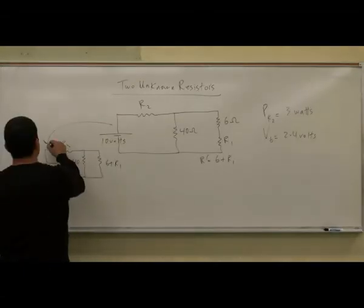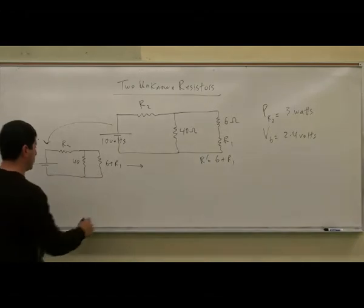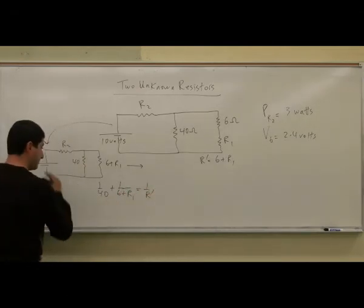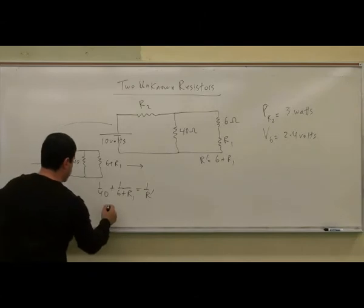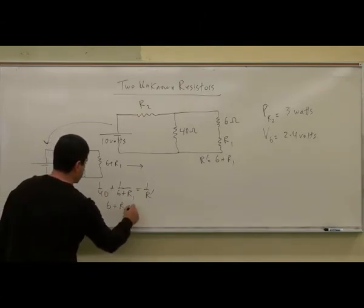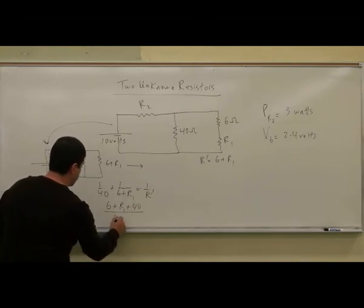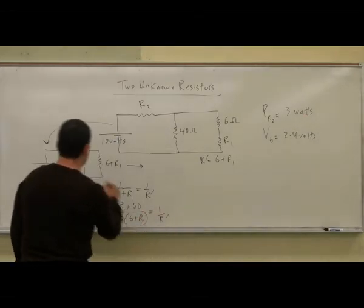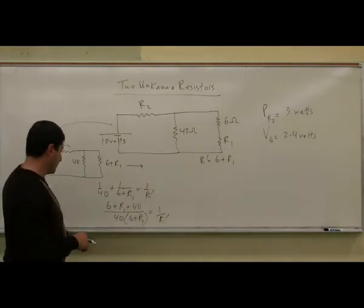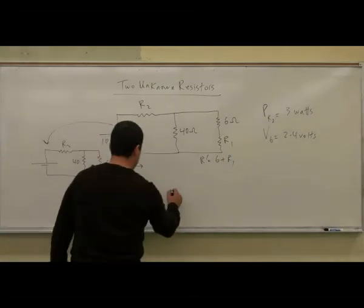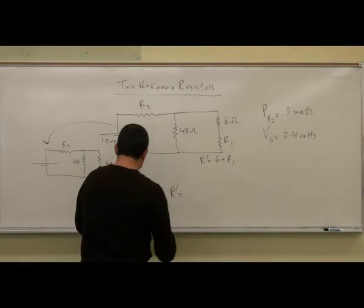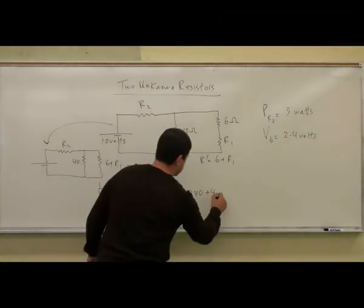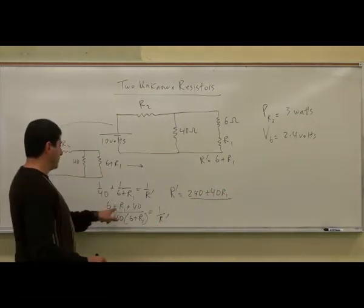We go from the series combination to a parallel combination. So one over 40 plus one over (six plus R1) equals one over R prime. Cross-multiplying gives (six plus R1 plus 40) over (40 times (six plus R1)) equals one over R prime. Reciprocating, R prime equals (240 plus 40R1) divided by (R1 plus 46).